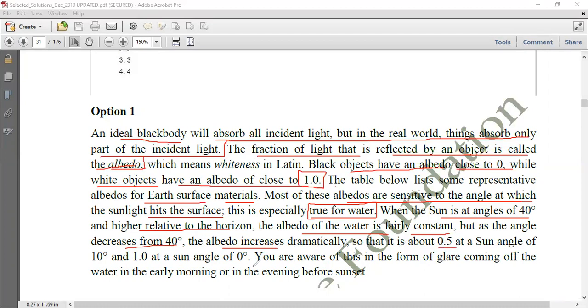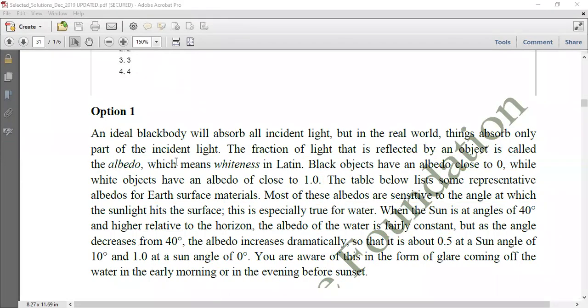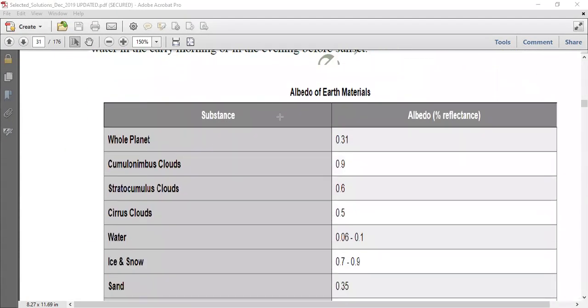It is about 0.5 at sun angle is 10 degree. And 1 at sun angle is 0 degree. You are always aware of this form of glare coming of the water with early morning and evening before the sunset.